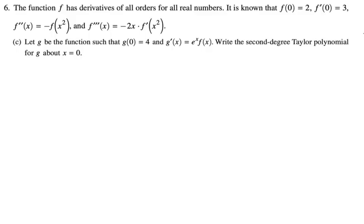Okay, so to do that, we're going to need to know g(0), which is given, g'(0), which we can find, and g''(0), which we'll have to work out. And then we'll just use our formula. So g'(0) is going to be e^0 times f(0), which is going to be one times f(0) is two. So one times two, or two.